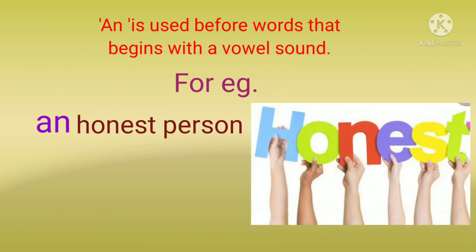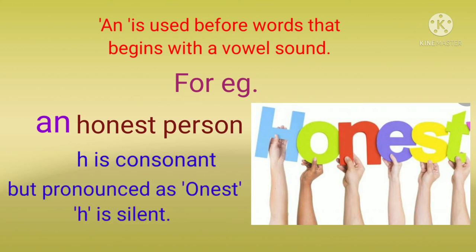Next is 'an honest person.' अब यह word 'h' से start हो रहा है, H is not a vowel, but यहाँ इस word को pronounce करते हुए हम बोलते हैं — 'honest.' H is silent here. So here we will use 'an' article क्योंकि यह word 'o' से start हो रहा है — इसकी sound 'o' से start हो रही है — तो 'an honest person.'